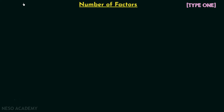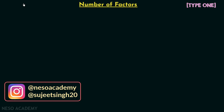In the previous lecture we had a discussion on prime numbers and composite numbers, and there we saw how to find out the total number of factors for a composite number by following the conventional method. Now we are going to discuss the shortcut method to find out the number of factors of a given number. Finding out the total number of factors is a type one problem asked from the chapter Number Systems in the examination.